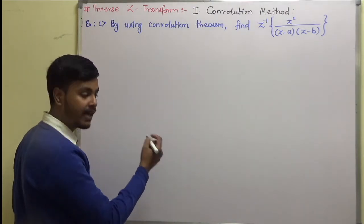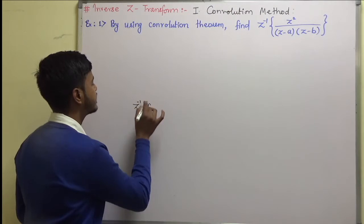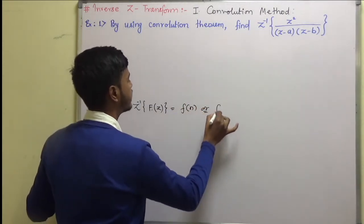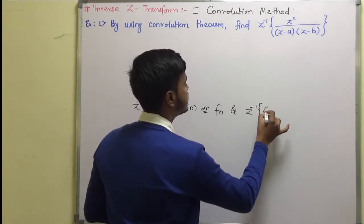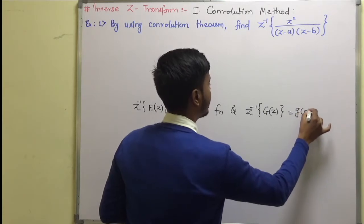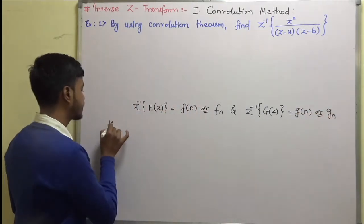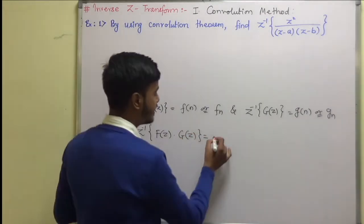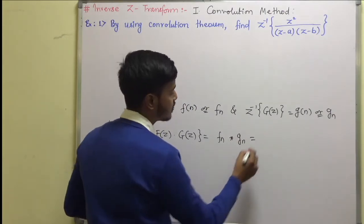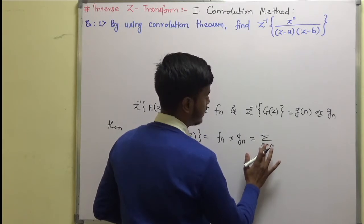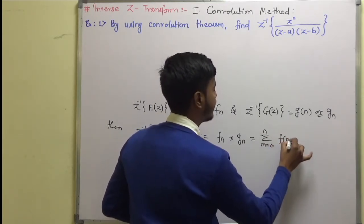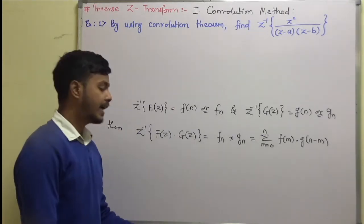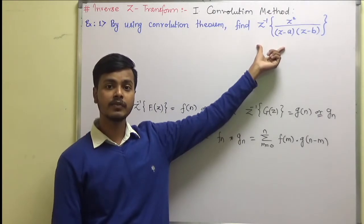Let us recollect the theorem we have discussed. If the z-inverse transform of F(z) is f(n), and the z-inverse of G(z) is g(n), then the z-inverse of their product F(z)·G(z) is equal to f(n) convolved with g(n), which is the same as the summation from m = 0 to n of f(m)·g(n − m). This is the result we will use to get the inverse z-transform with the help of convolution.